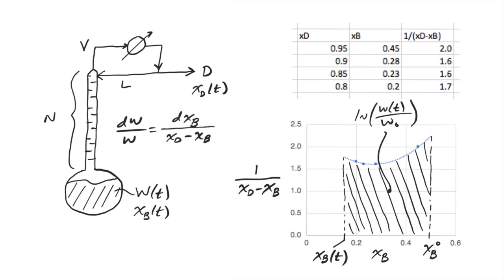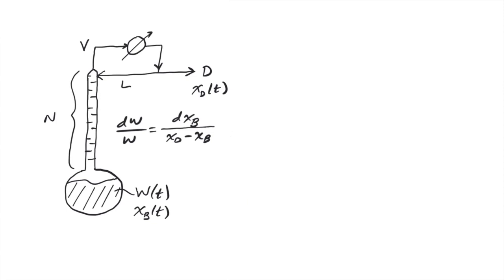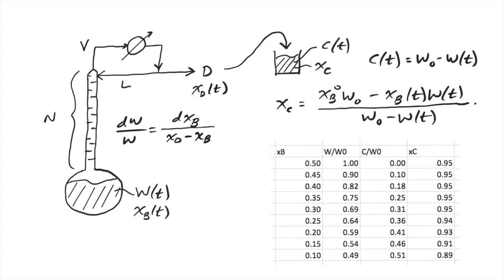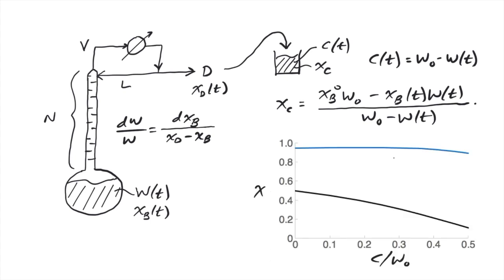Once W is known as a function of XB, we can make other relevant predictions. For example, we usually want to relate process conditions to the amount C and concentration XC in the collected product. These quantities can be related by mass balance to W and XB remaining in the pot. Taking C as the independent variable representing time, we can then use our previously acquired relationship of XB and W to predict the pot and collected product concentrations over the course of the batch. This allows us to determine how much of the pot we can distill while still achieving a particular target concentration in the collected product and how much time and energy is required and so forth.